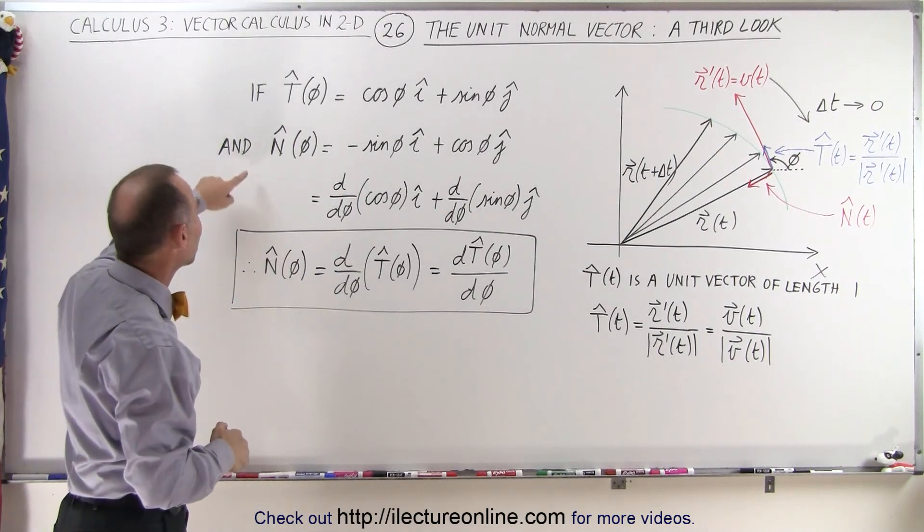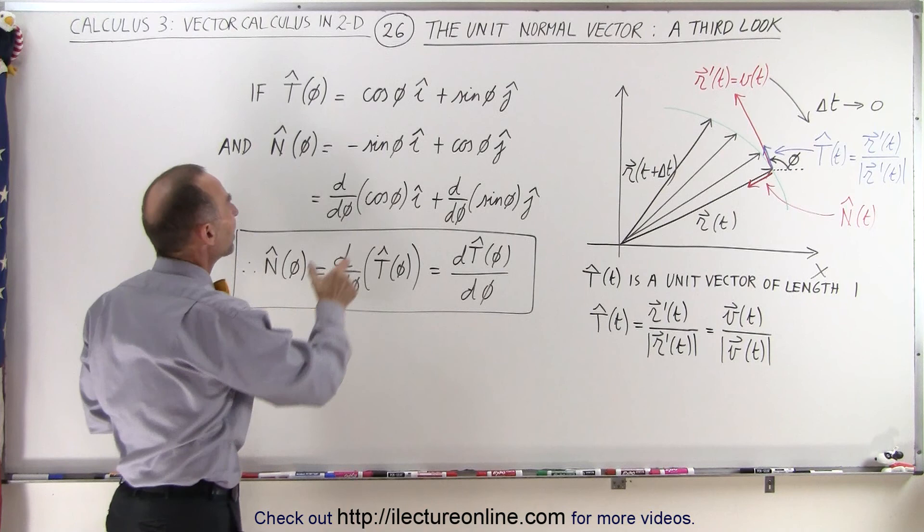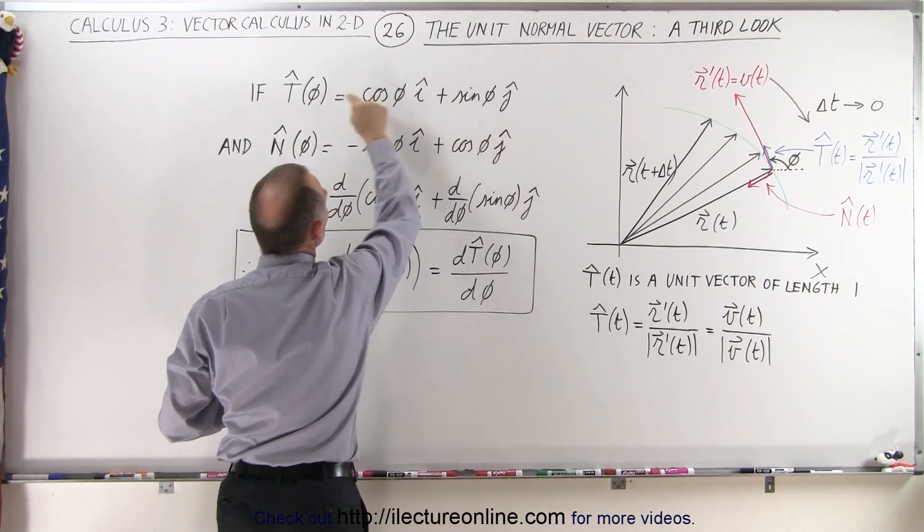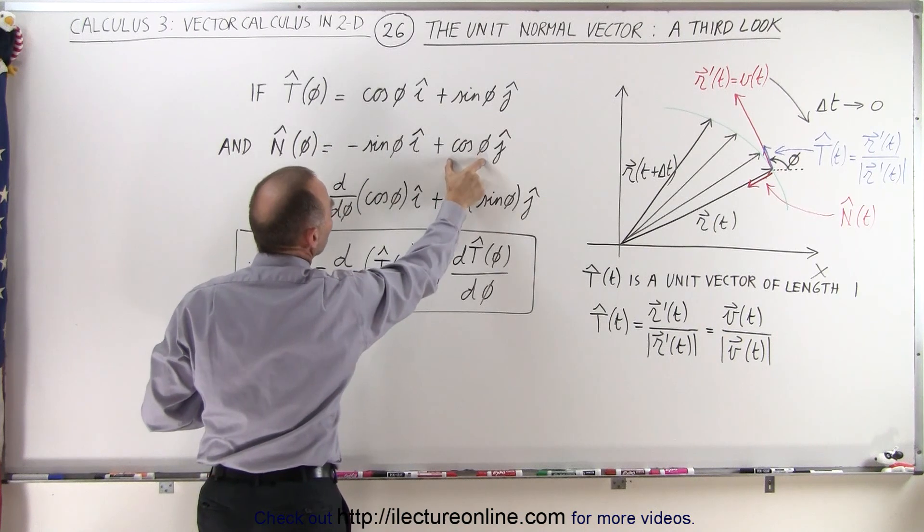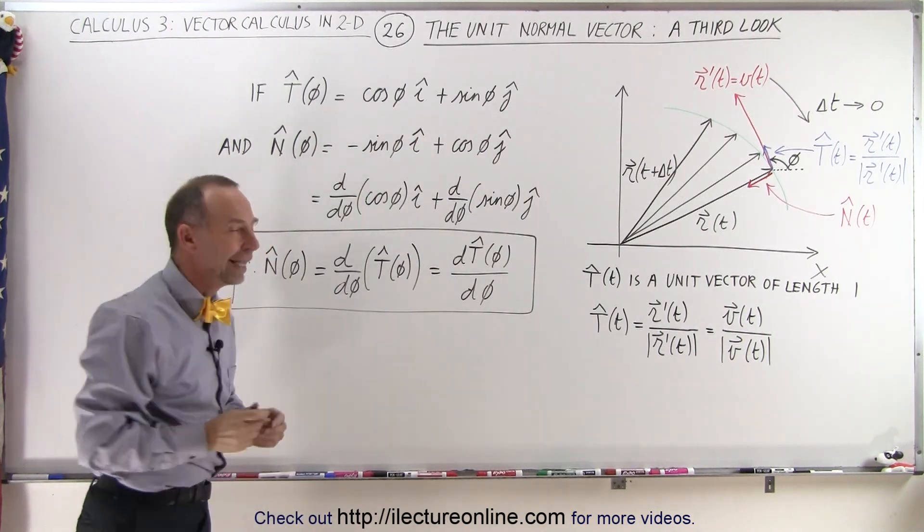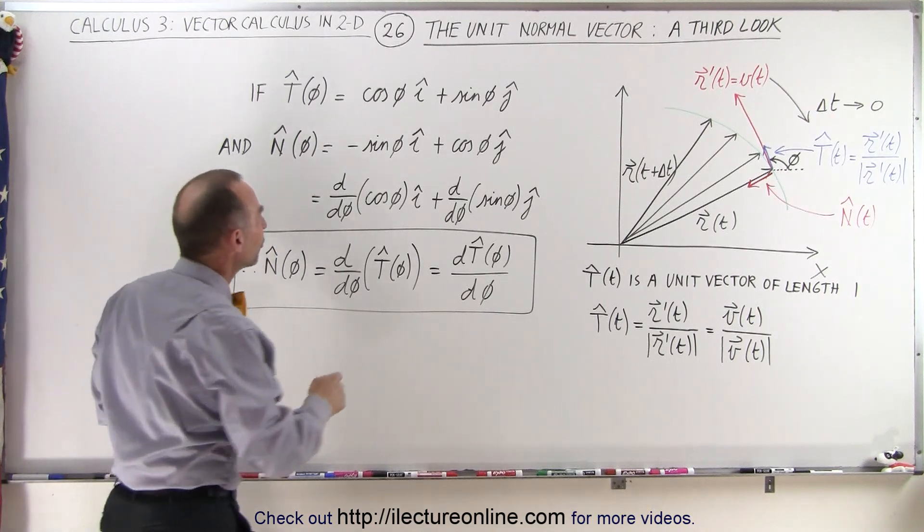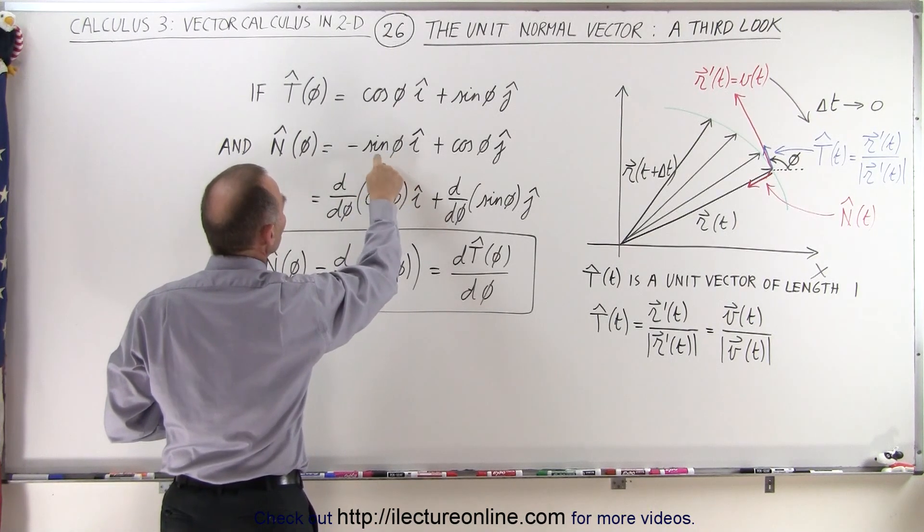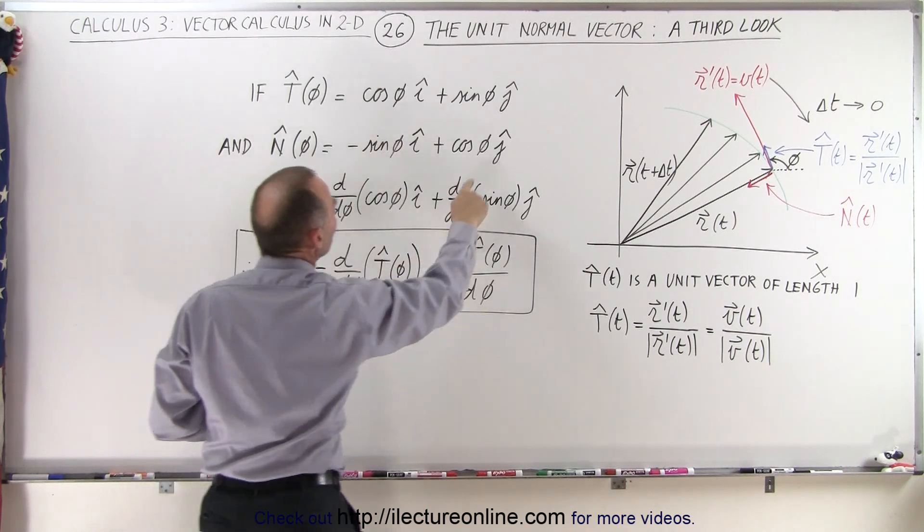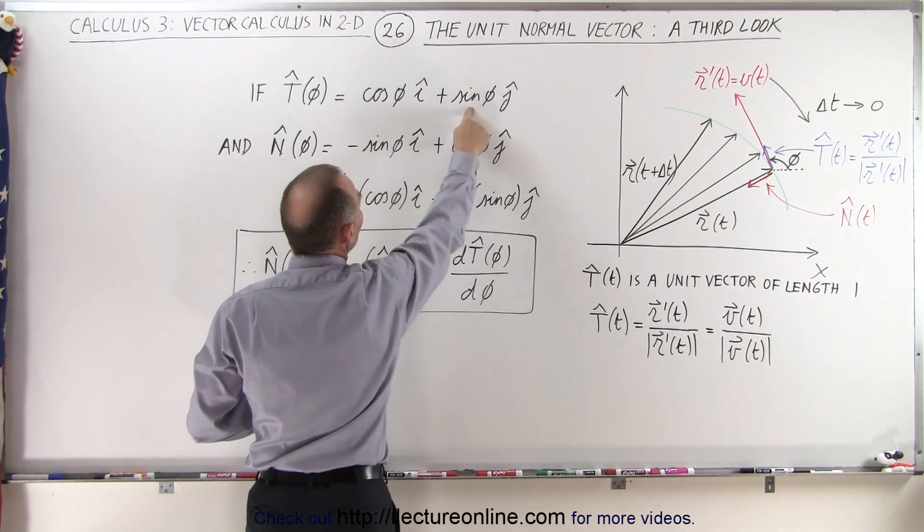And we've then defined the unit normal vector as taking the x component here being the negative y component of the unit tangent vector and the y component being the x component of the unit tangent vector. And then if you take a close look, notice that minus the sine of phi is actually the derivative of the cosine of phi and the cosine of phi is actually the derivative of the sine of phi.